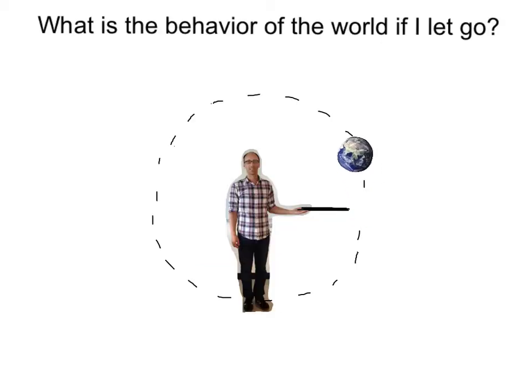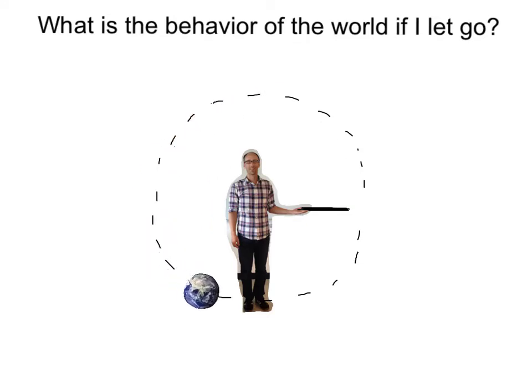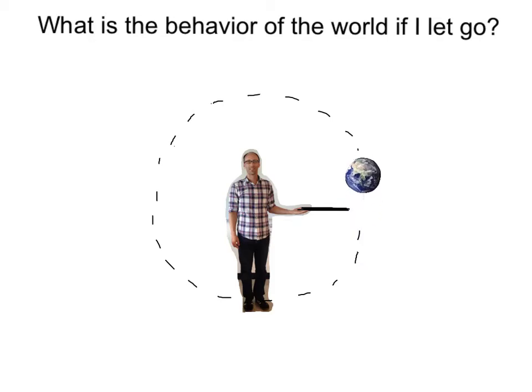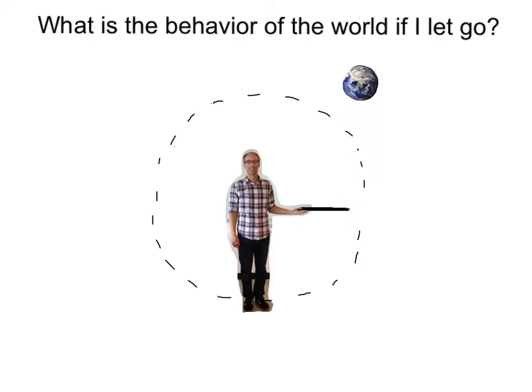What is the behavior of the world if I let go? Well, if I let go, the world would just continue in its straight-line path — and that's due to its own inertia. Remember that inertia is an object's tendency to maintain its motion.